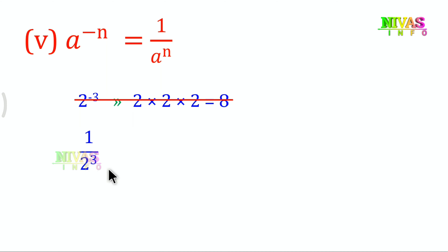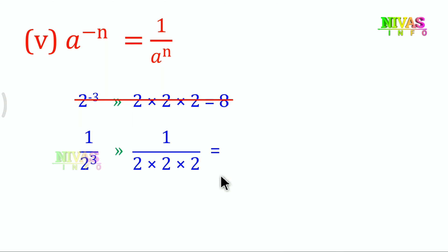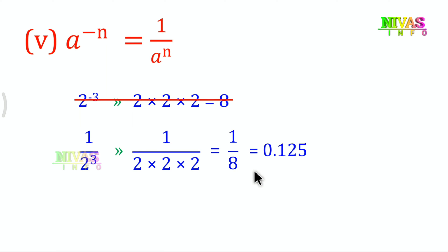Simplifying 2^(-3): the denominator is 2 into 2 into 2, which is 8. So the result is 1 by 8, which equals 0.125.